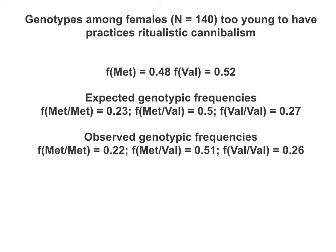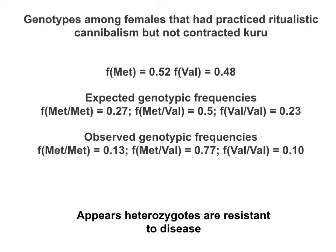Looking at the older females who had been exposed to high levels of Kuru but had not contracted the disease, their allele frequencies were very similar to the younger group, so expected Hardy-Weinberg genotypic frequencies were also similar. However, when comparing observed genotypic frequencies, there was an overabundance of heterozygous individuals, indicating that heterozygous individuals seem to be somewhat resistant to Kuru disease, and that selection is actually favoring the heterozygotes.